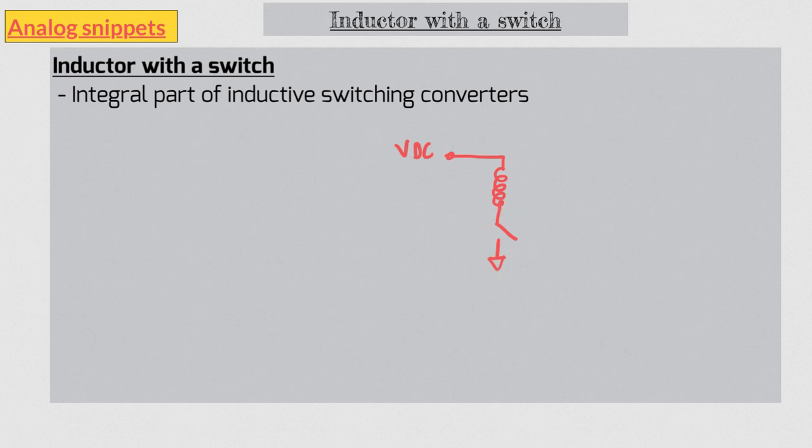When switch is closed we essentially have this inductor between the supply and the ground. And according to this equation we'll have a linearly increasing current into this inductor.